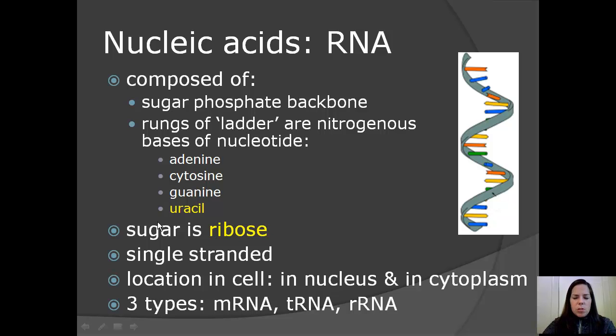So let's really get into the description of RNA. RNA is composed of the sugar phosphate backbone, located here in the diagram. The rungs of the ladder are nitrogenous bases, which include adenine, cytosine, guanine. And the difference also between DNA and RNA is uracil. Remember back in DNA that that was replaced by thymine. The sugar is ribose. RNA is single-stranded. The location in the cell of RNA is in the nucleus, as well as the cytoplasm. And there are three types of RNA: messenger RNA, transfer RNA, and ribosomal RNA. We're going to learn further about those three types when we get into protein synthesis later on.